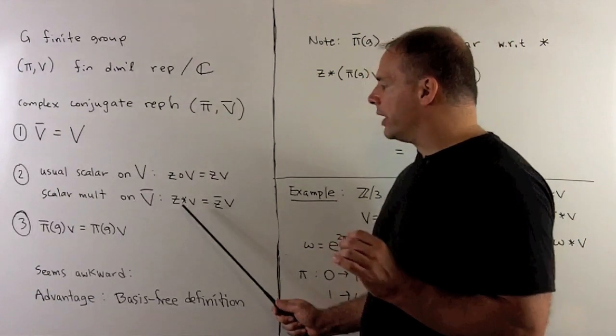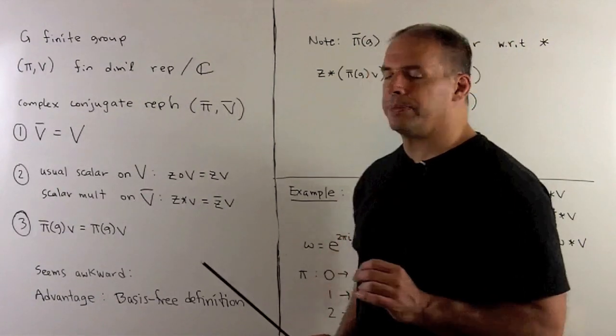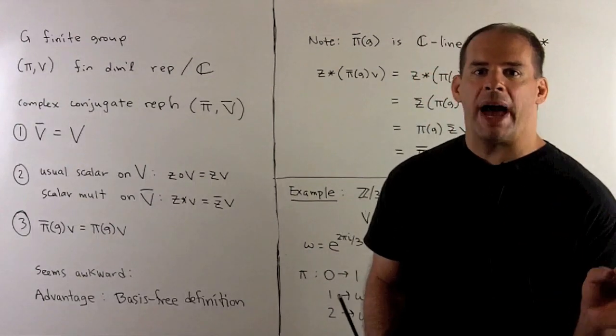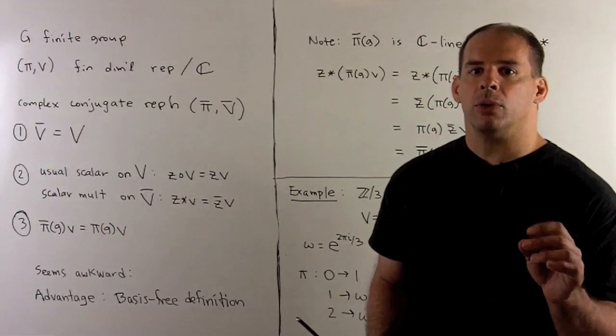If I want to be clear, we'll call this Z star V. Finally, for the group action on V bar, we leave things unchanged.